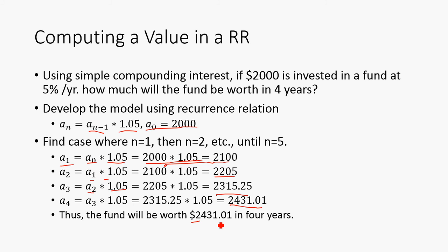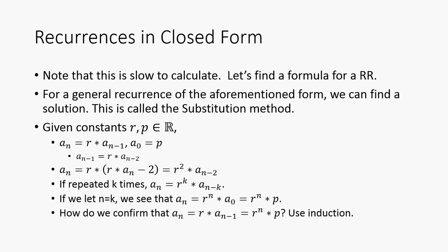Alright, so you might be thinking that obviously we can just use the formula for simple interest. Well, this is how you kind of come up with the formula. So we're just given constants r and p in the real numbers. So that a_n is going to be r * a_(n-1), and a_0 = p. So p for principal, and r will be for the growth factor, 1 plus the rate.